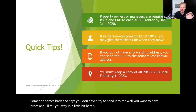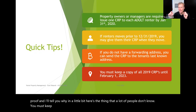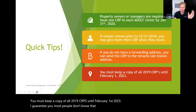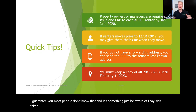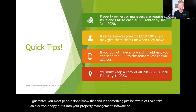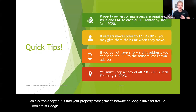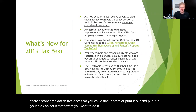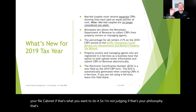You must keep a copy of all 2019 CRPs until February 1st of 2023 — most people don't know that. I say take an electronic copy and put it into your property management software or Google Drive for free. If you don't trust Google, there's Dropbox, Apple — there are probably a dozen free cloud options — or print them out and put them in your file cabinet. Whatever you do to stay organized, that's what you should do here too.